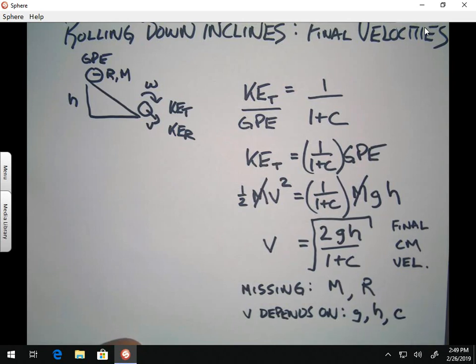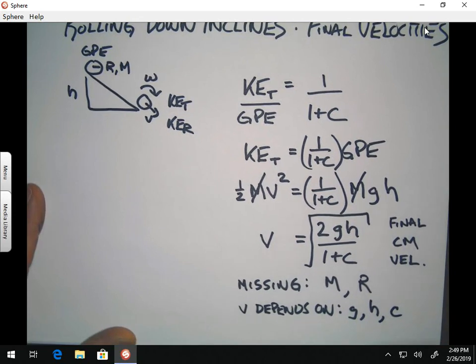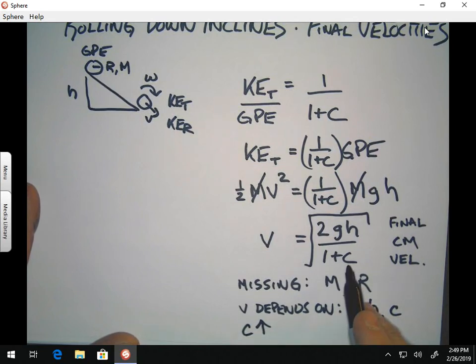And the idea would be that as the shape factor increases, if C becomes bigger, what happens is that this whole expression is going to get smaller. And so, the velocity is going to go down.